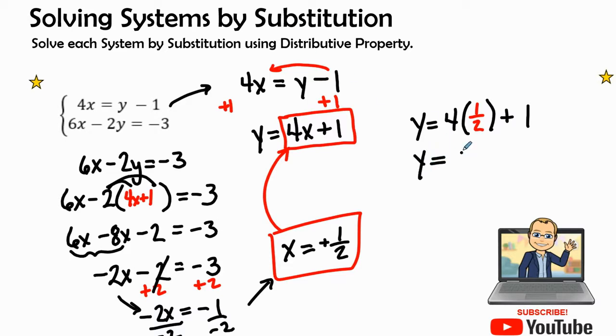4 times a half, there's 4 halves. Well, 4 halves is the answer of 2 because 4 times 1 is 4 and 1 times 2, because remember this would be like over 1, 1 times 2 is 2. 4 divided by 2 gives me 2 plus 1. So my y coordinate in the point of intersection is y equals 3.